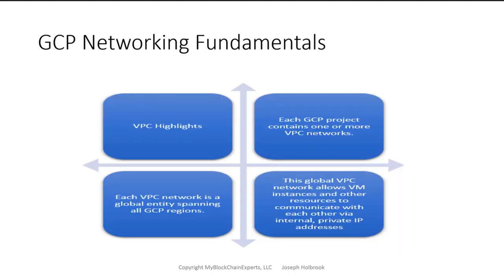Some other highlights to note: each project contains one or more VPCs. So if you have 20 projects, you're going to have essentially 20 VPCs at a minimum. However, you can have 10 VPCs in each project if you want — it's up to you on how you want to deploy your resources in GCP. Remember, it's a global entity. When we say global entity, it is going to span all the Google resources in every GCP region, without actually traversing the Internet.